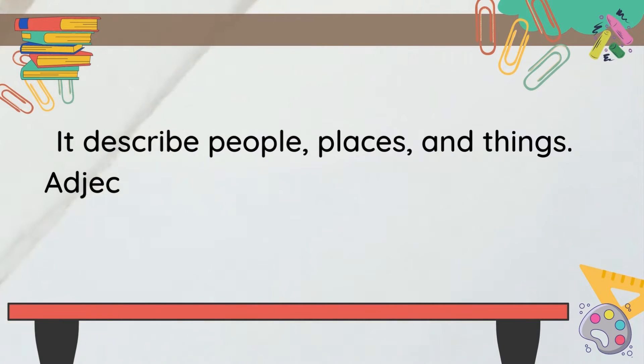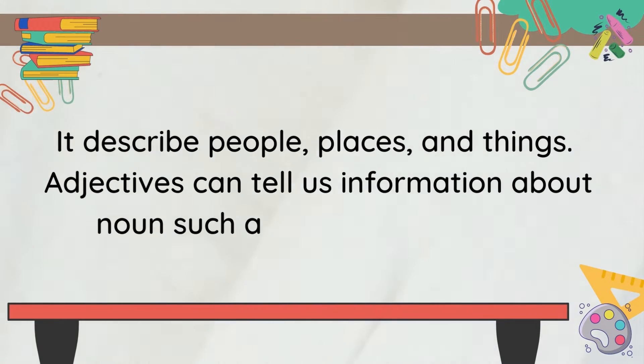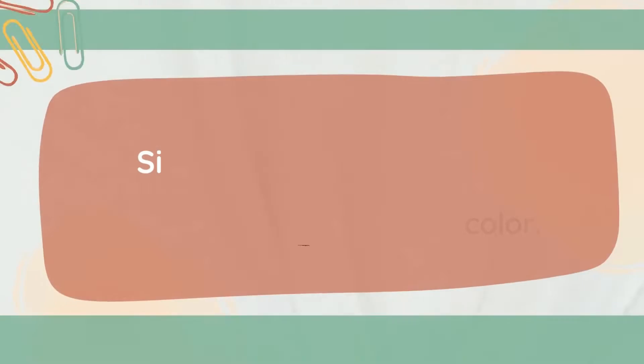It describes people, places, and things. Adjectives can tell us information about nouns such as the size and color.